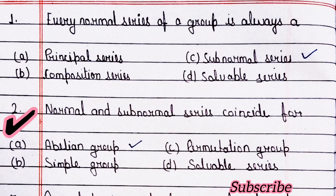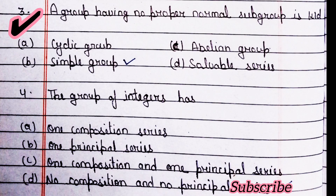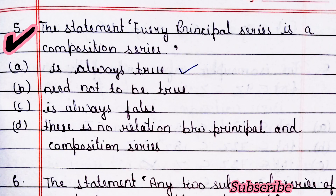Next question: normal and subnormal series coincide for — option A is right, abelian group. Question number three: a group having no proper normal subgroup is called — option B is right, which is simple group. Question number four: a group of integers has — option D is right, no composition and no principal series.